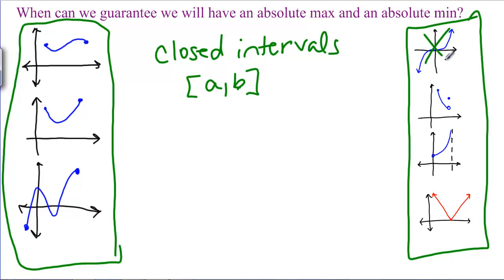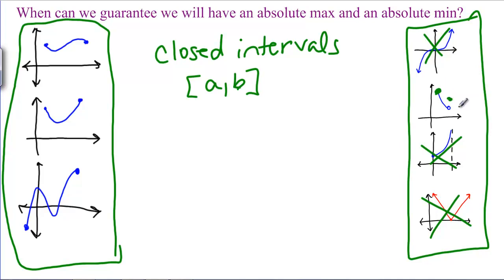This one doesn't have a closed interval, so that takes care of that one. This one doesn't have a closed interval, so that takes care of that one. This one doesn't have a closed interval, that takes care of that one. This one is actually defined on a closed interval — it starts up here, goes all the way down, and ends at a closed dot — but the problem with this graph is that it's not continuous.